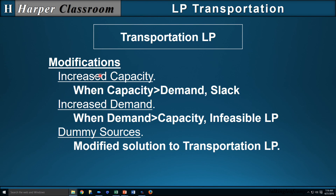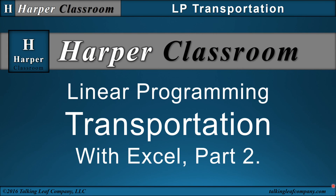To summarize: for the modification of increased capacity, when capacity exceeds demand, we'll have slack — some capacity will not be shipped. With increased demand, when demand exceeds capacity, we have an infeasible LP with no solution. But dummy sources create a modified solution to the Transportation LP to show what can be shipped, where it's going to be shipped, and what will not be shipped — all in the most efficient manner possible. This ends the video: Linear Programming Transportation with Excel, Part 2. I hope this helps. Thanks for watching.